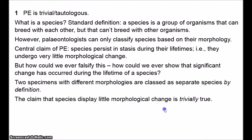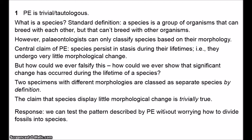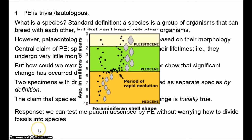Punctuated equilibrium ultimately describes a pattern of macroevolution, and we can test this pattern without talking about species. We'd be looking for very rapid emergence of a new kind of form followed by stasis of that form. Just talk about emergence of a particular morphology over thousands of years followed by stasis for millions of years. If we saw one form giving rise to two forms and then both forms remaining in stasis, we have punctuated equilibrium.